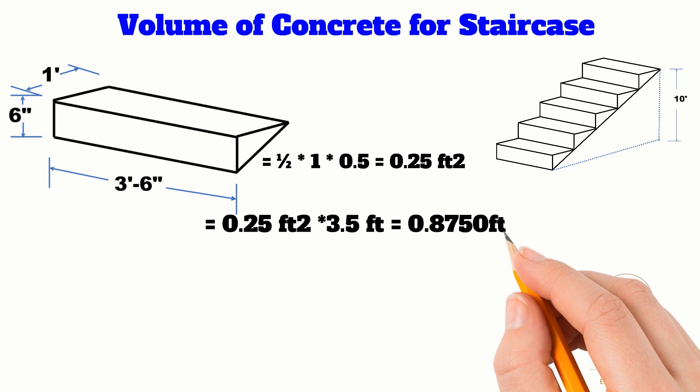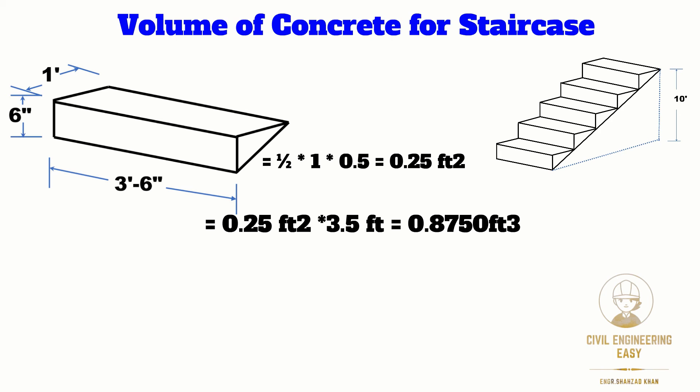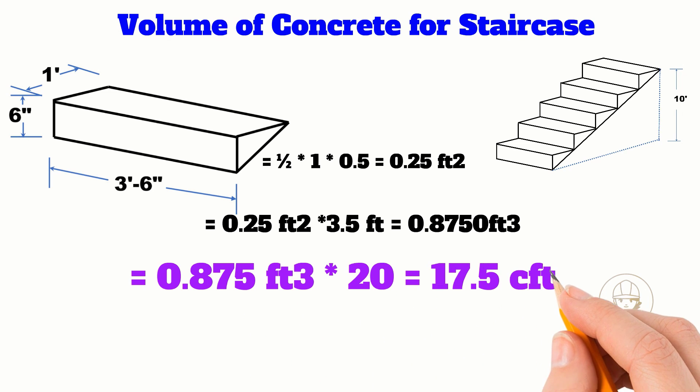We have 20 steps. To find the total volume, multiply 0.875 cubic feet by 20, which gives us 17.5 cubic feet.